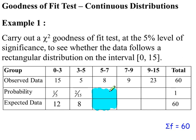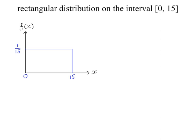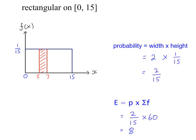So we're going to work out the missing values here. A rectangular distribution on the interval 0, 15. The width is 15, so the height is 1 divided by the width, 1 over 15. Between 5 and 7, the probability is the width, so that's the width of 2, times the height, 1 over 15.